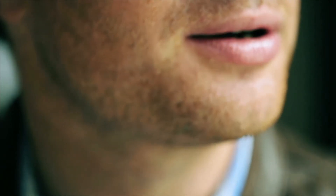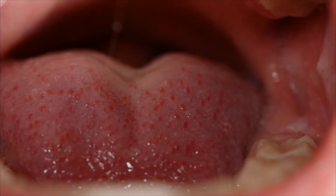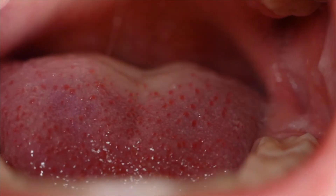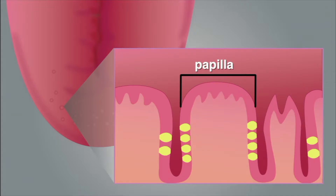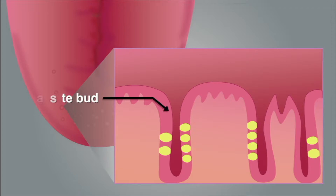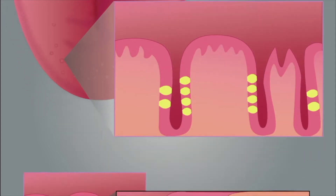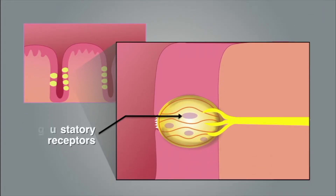What enables the tongue to taste flavor? The bumpy structures that cover the tongue's surface are often mistaken for taste buds. But those bumpy structures are papillae — goblet-shaped elevations that help create friction between the tongue and food, enabling the tongue to form the food into a bolus. Most papillae contain taste buds, which are much smaller and located within the folds of the papillae. Taste buds have specialized cells called gustatory receptors, which respond to stimuli from the chemicals in food.